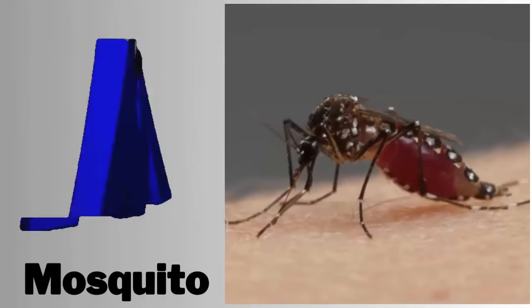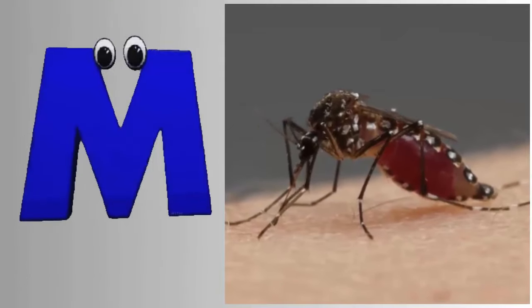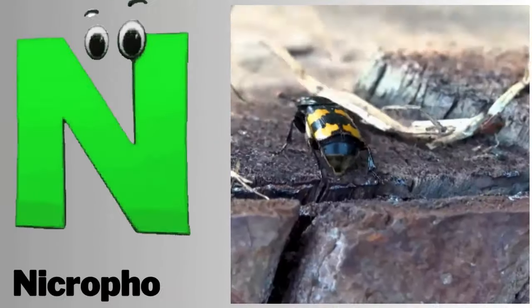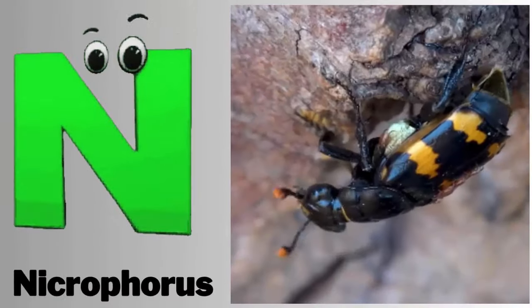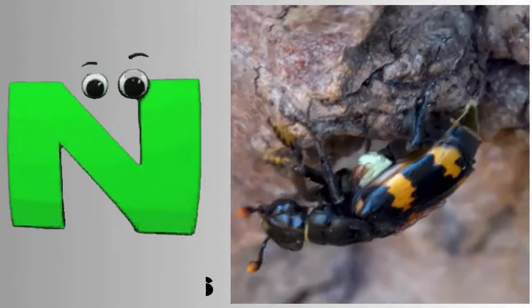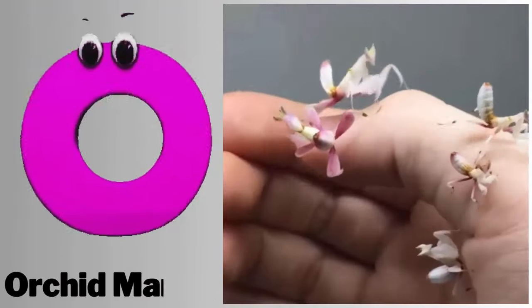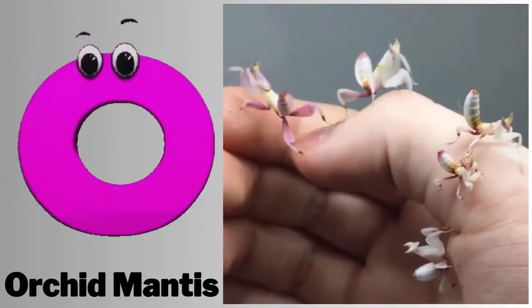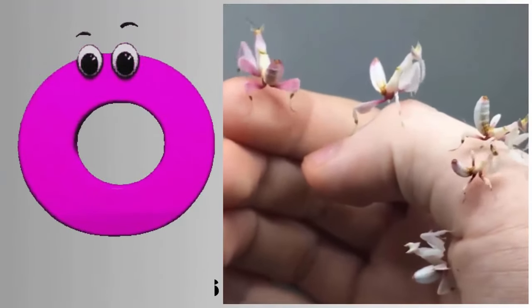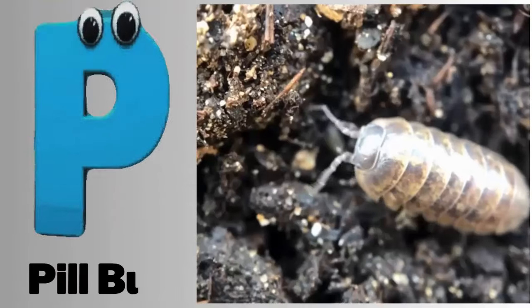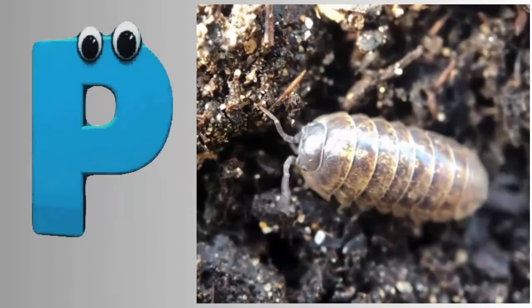M. M for mosquito. N. N for nycrophores. O. O for orchid mantis. P. P for pill bug.